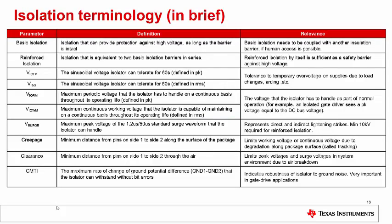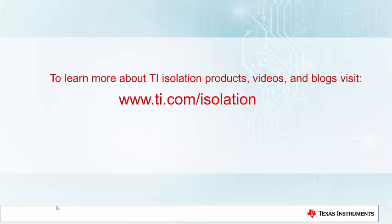You'll find here a summary of isolation terminology, in brief, that covers some of the basic definitions and terminology covered in this discussion. For a more detailed list, visit www.ti.com and look for lit number SLYY063. We hope you have enjoyed learning a little bit more about isolation standards and terminology. To learn more about TI isolation products, videos, and blogs, please visit www.ti.com/isolation.